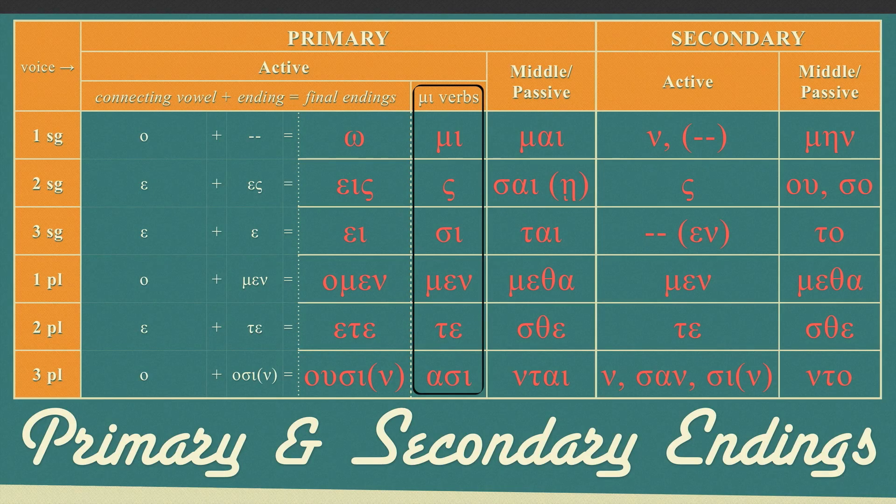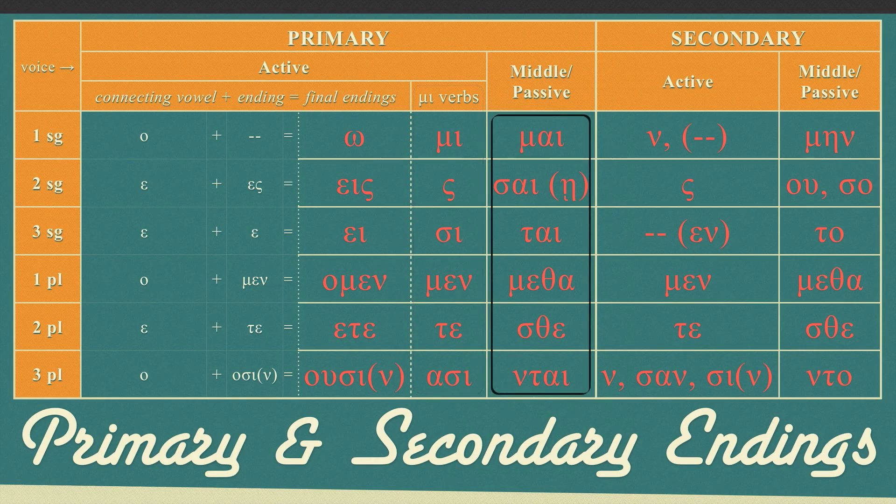Primary middle passive endings are MY, SI, or A, TI, METHE, STH, NTI.